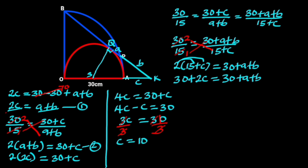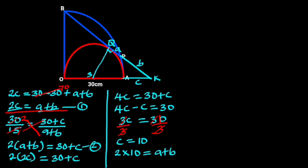Next, we substitute c equals 10 into equation 1. This gives 2 times 10 equals a plus b, which implies a plus b equals 20 centimeters. Let's call this equation 3. Also, c equals 10.